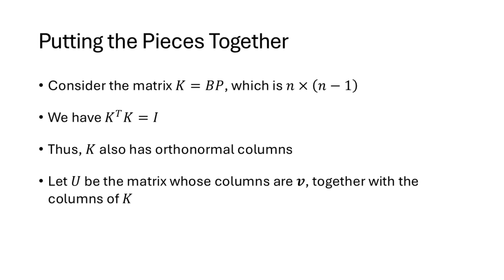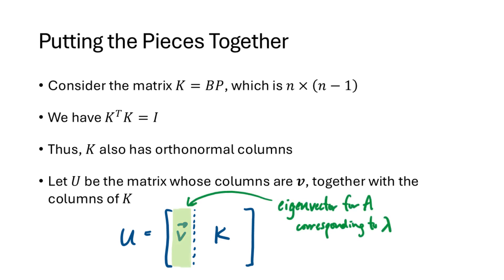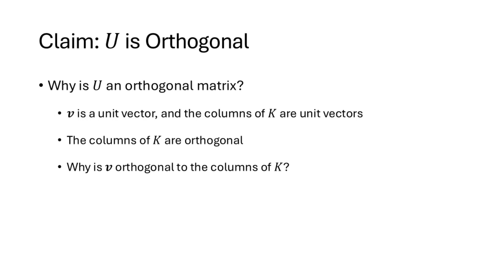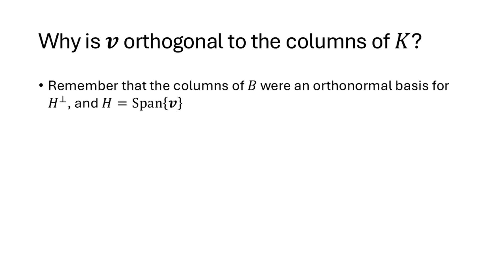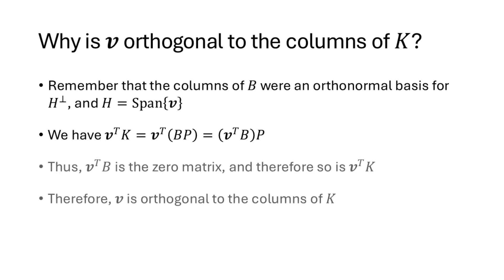We construct a new matrix U whose first column is the vector v and whose remaining columns are the columns of K. Since K has n−1 columns, U is an n×n matrix. V was the eigenvector for A corresponding to eigenvalue lambda. U is an orthogonal matrix because: v is a unit vector, the columns of K are orthonormal, and v is orthogonal to the columns of K. To see why v is orthogonal to the columns of K: the columns of B were an orthonormal basis for H⊥ and H was the span of v, so v^T B = 0. Then v^T K = v^T BP = (v^T B)P = 0. So v is orthogonal to all columns of K, confirming U is orthogonal.